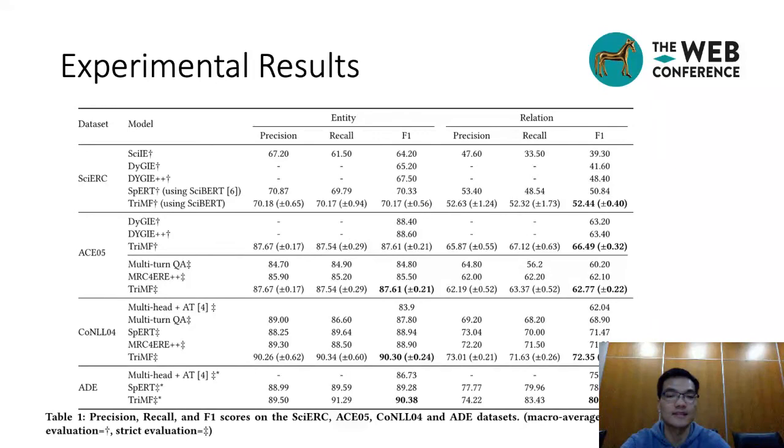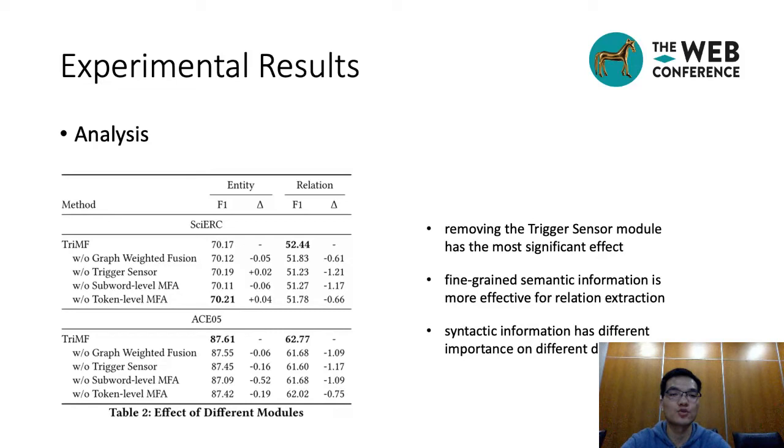We conduct an ablation study to further investigate the effectiveness of these modules. Removing the trigger sensor module has the most significant effect. Comparing different level MFA, we find that the improvement of MFA at sub-word level is more significant. We thus believe that fine-grained semantic information is more effective for relation extraction. The performance of the syntactic-semantic graph weighted fusion module varies widely across datasets. We think that syntactic information has different importance on different domains.